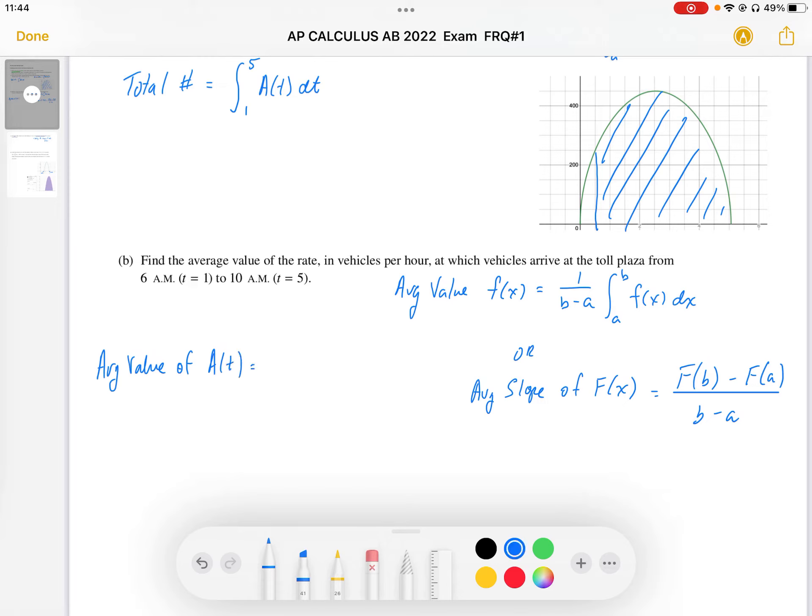That's going to be equal to 1 over the interval value, which is 5 minus 1, and it's going to be the area from 1 to 5 under the a(t) function.